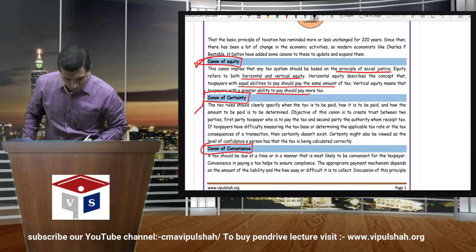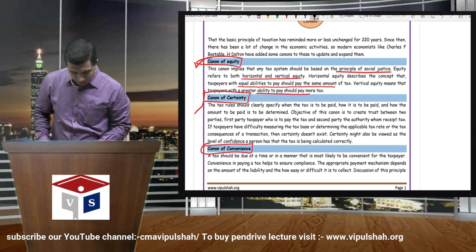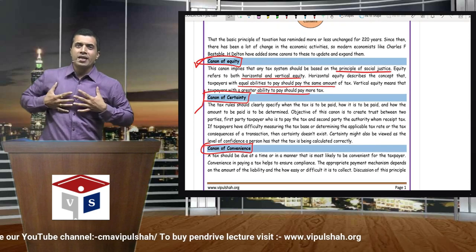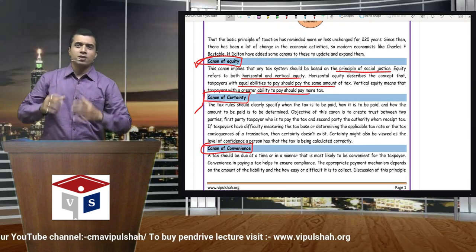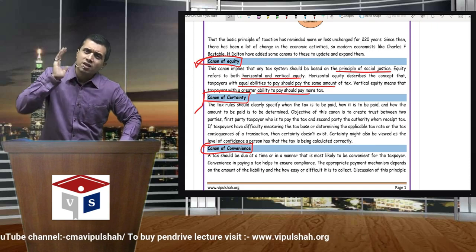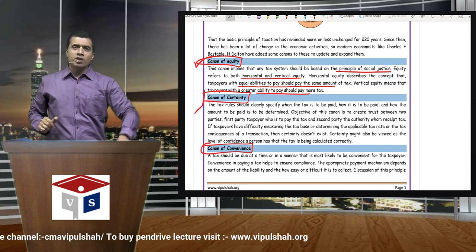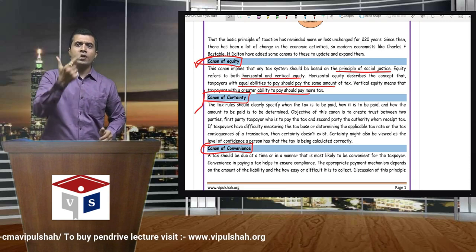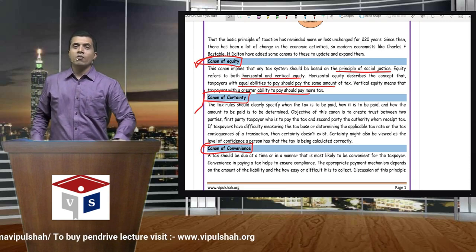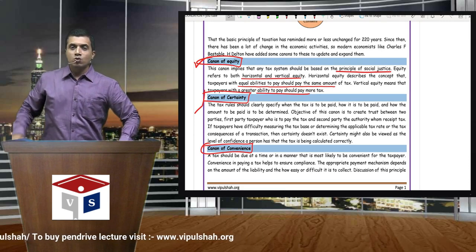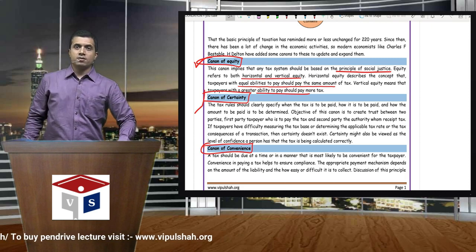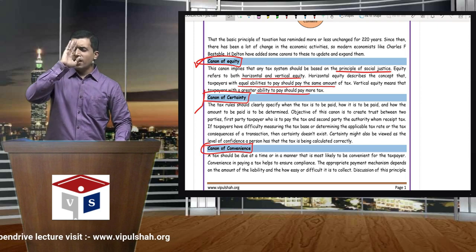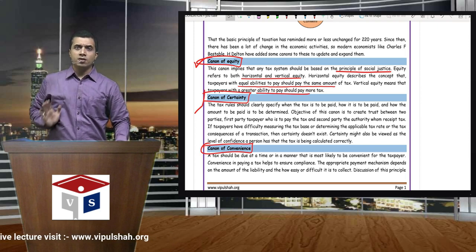Second is Canon of Certainty. Certainty means that as a taxpayer, you should know how you have to pay the government. There should be clarity among the tax rules — how do you have to pay, when do you have to pay? Everything must be crystal clear.